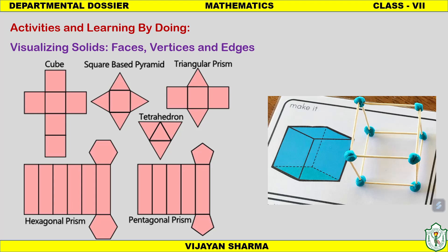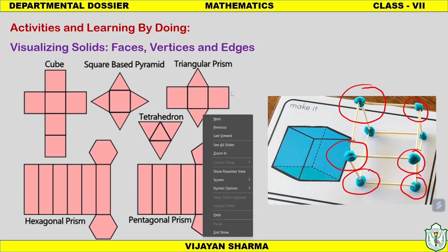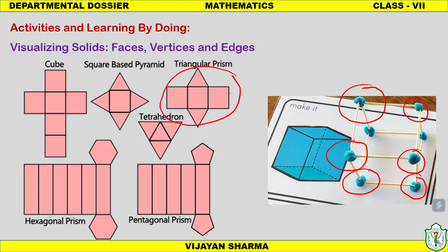Various topics in mathematics need to be taught through learning by doing and activities. In the chapter on visualizing solids, where students count the number of faces, vertices, and edges, we ask them to make solids using matchsticks and clay. With these models, they can count faces, vertices, and edges. We can also make paper-cutting models of 3D structures like triangular prism, square base prism, cube, cuboid, hexagonal prism, and pentagonal prism — folded to create a 3D structure.